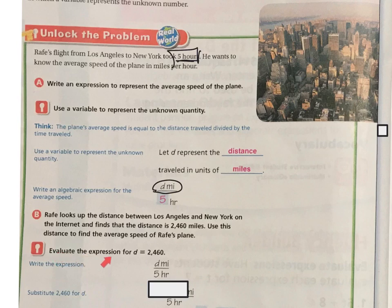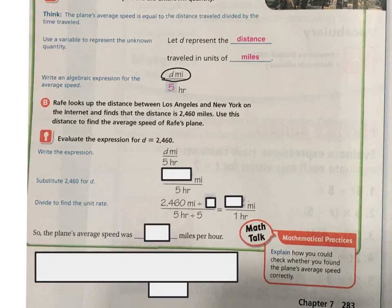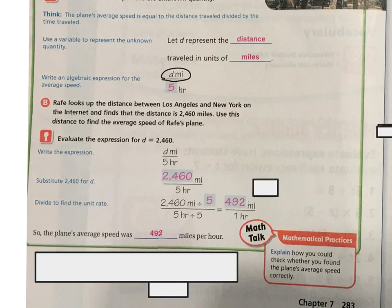So we're going to evaluate the expression for where the D is. So there's my D. I'm going to plug in 2,460. So now I'm going to write my expression. So I'm substituting the 2,460 for D. So now I have 2,460 divided by the 5 hours. And when I divide 2,460 divided by 5, I get 492. So the speed was 492 miles per hour.